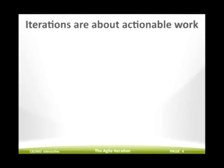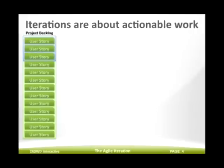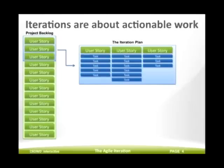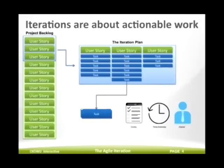Iterations are about creating actionable work out of some bigger project vision. In every Agile project, there's a backlog, which is a prioritized list of features, also known as user stories. Those features are ordinarily ranked from top to bottom — the most important on top, the least important on the bottom. What you do in an iteration is take the top stories off the stack, move them into the sprint, and break them down into the relevant tasks required to make the story complete. In order to make those tasks actionable, you have to do three things.